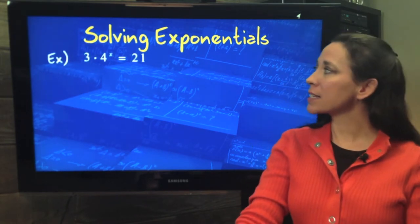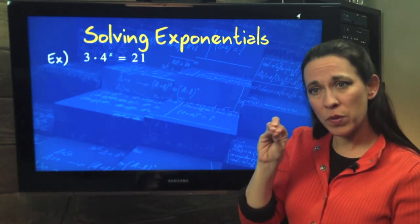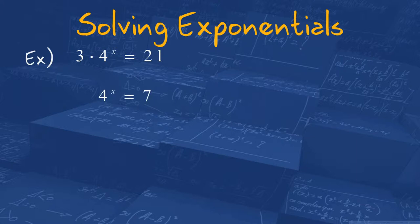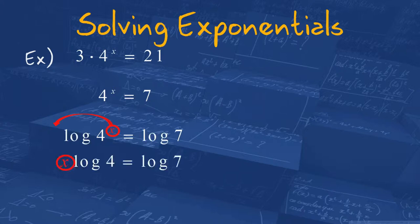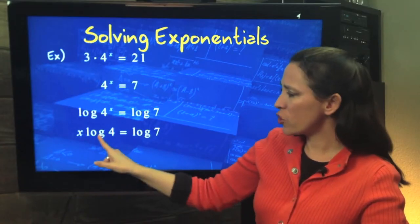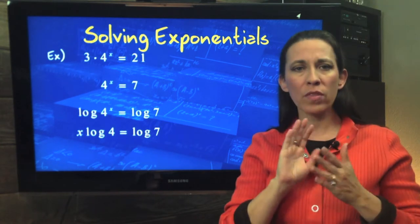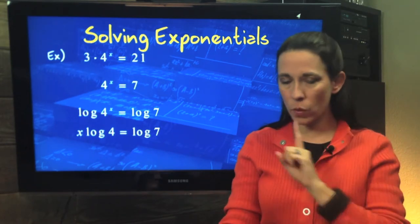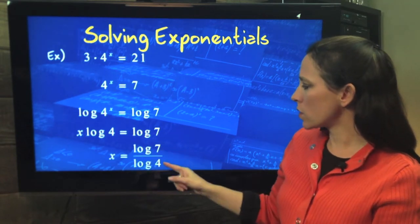We have 3 times 4 to the x equals 21. It's an exponential because x is in the exponent position. We want to get this factor by itself by dividing both sides by 3. So we get 4 to the x equals 7. A logarithm is what undoes that variable exponent, so we're going to take the common log of both sides. That means we can now move the x to the front. Now we have x times log of 4. To undo multiplication, we divide.